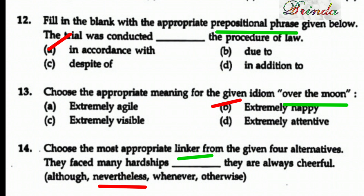Thirteenth question: Choose the appropriate meaning for the idiom 'over the moon.' The options are extremely agile, extremely happy, extremely visible, extremely attentive. 'Over the moon' means extremely happy — 'sandoshan.' Agile means active, visible means being seen, attentive means focused. Answer is extremely happy, option B.